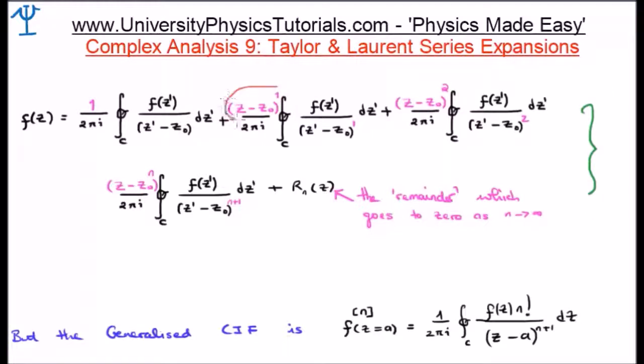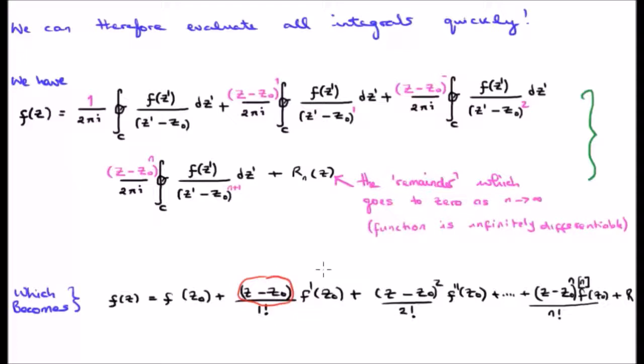So when we invoked the generalized Cauchy integral formula, which is at the bottom of your screen on the right, we got the Taylor series where we had the Z minus Z zero terms in the numerator.